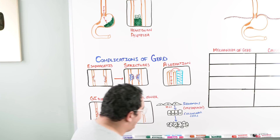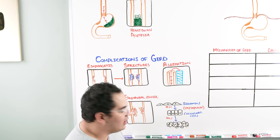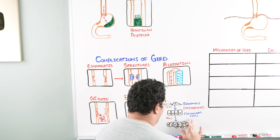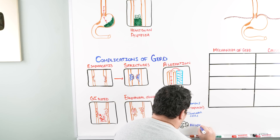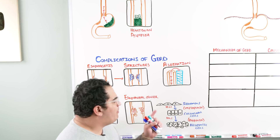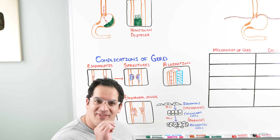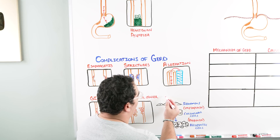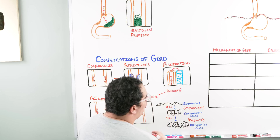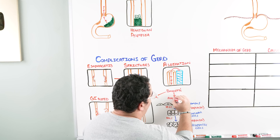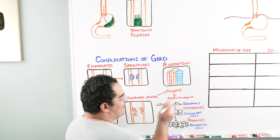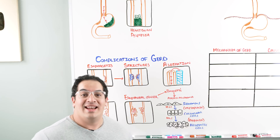If you continue to cause more erosive damage and inflammation, those columnar cells can turn into neoplastic cells — this process is called dysplasia. The key progression to understand is: Barrett's esophagus (metaplasia) progresses over time to adenocarcinoma (dysplasia). So metaplasia leads to Barrett's, and dysplasia leads to adenocarcinoma.